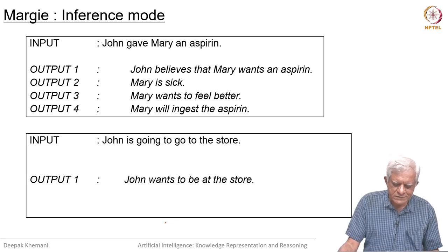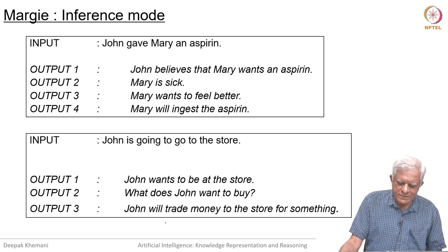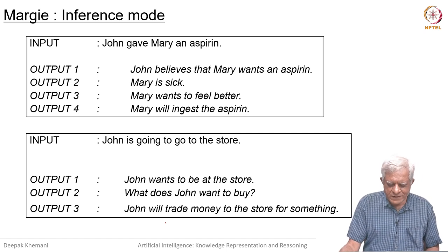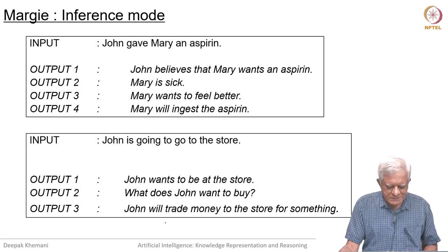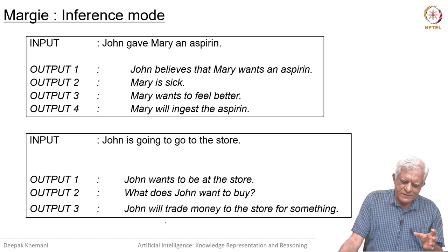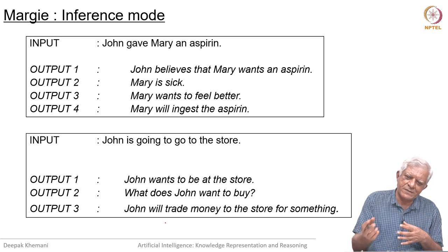John is going to go to the store. John wants to be at the store — a little obvious, but it is an inference you can make. What does John want to buy? Also a plausible inference or question. John will trade money to the store for something. For example, buying in conceptual dependency will be broken down into actions where you give money to somebody and somebody gives you something.